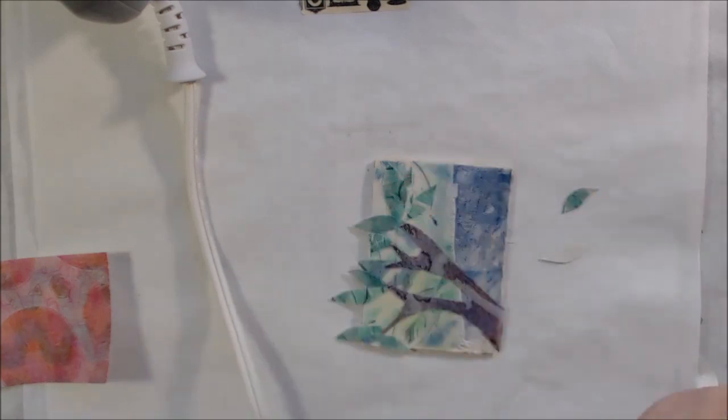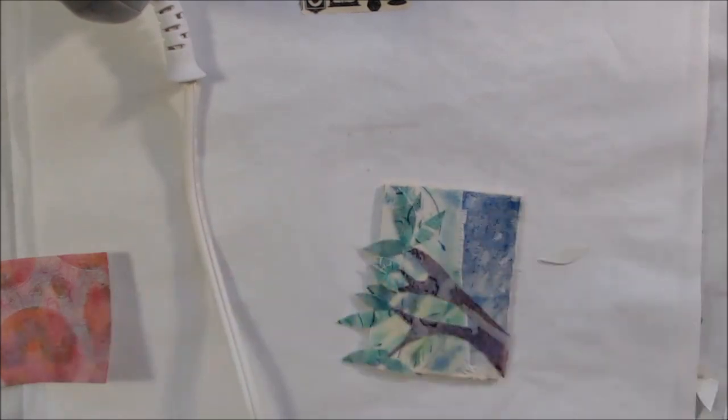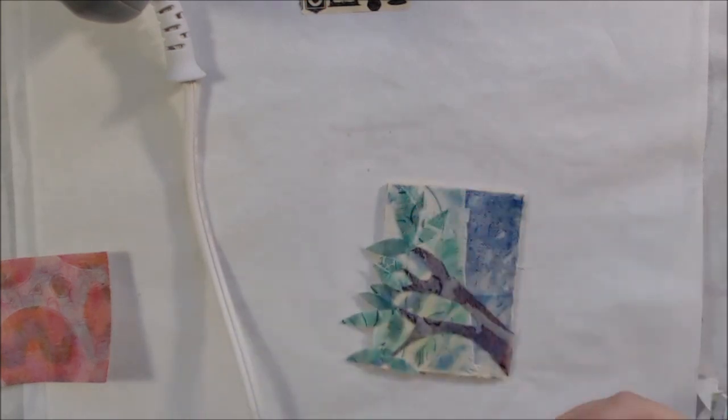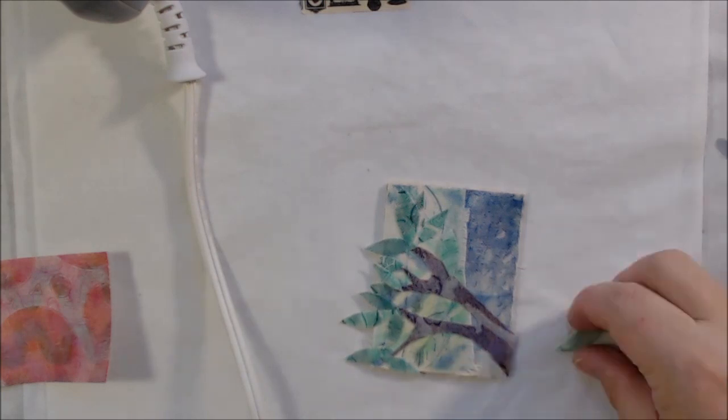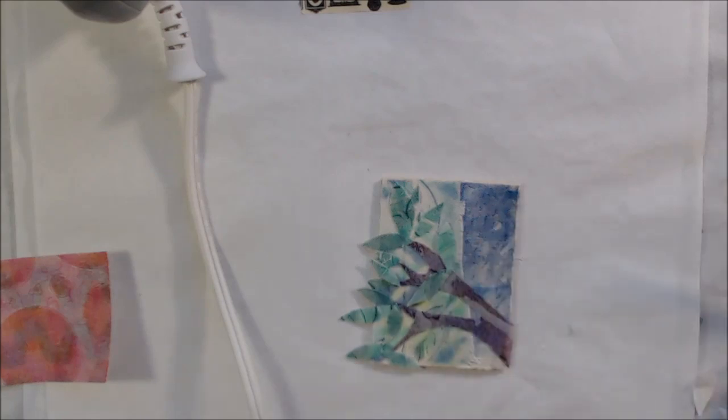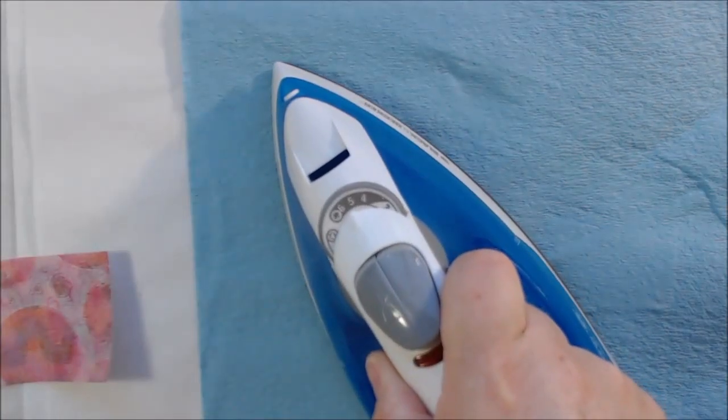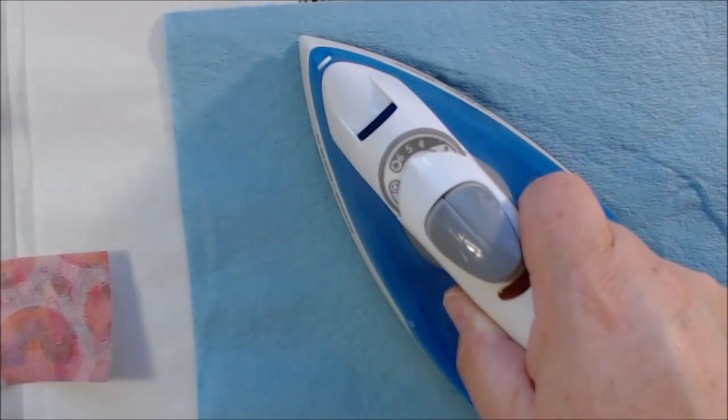Basically all I'm doing here is I am taking these pieces of gel-printed fabric and I'm cutting them out and then fusing them to this wood piece. The wood piece is just slightly smaller than an ATC. I wish it was exactly the size, but it's maybe a sixteenth of an inch smaller than that, but I figure it's close enough for my purposes.